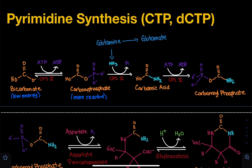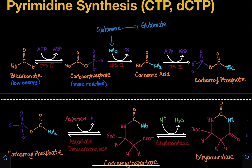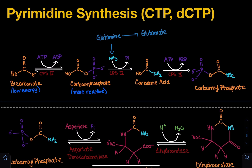Here, we're going to focus on how we generate CTP and DCTP — that's cytosine triphosphate, which is going to be used in RNA, and deoxyribose cytosine triphosphate, which is going to be used in DNA. We're not going to go over the earlier steps again because they're already covered in the pyrimidine synthesis de novo uracil video.